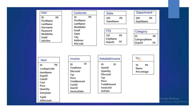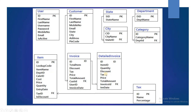Now let me talk about the relationships. The user table has a primary key. The customer table has ID as the primary key, and this customer ID will be used in the invoice table as a foreign key called cost_ID. The state table's S_ID will be used as a foreign key state_ID in the city table. In the department table, D_ID will be the foreign key for department_ID in the category table.